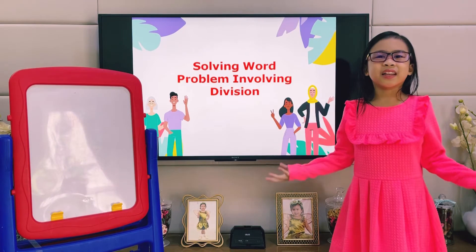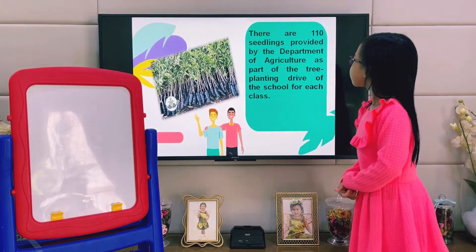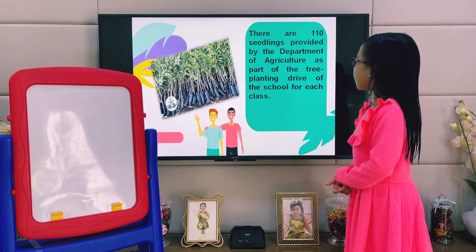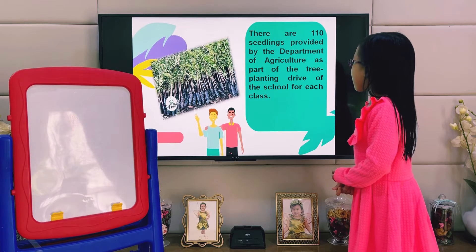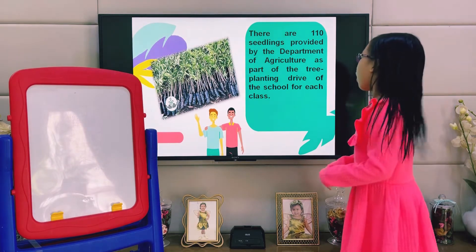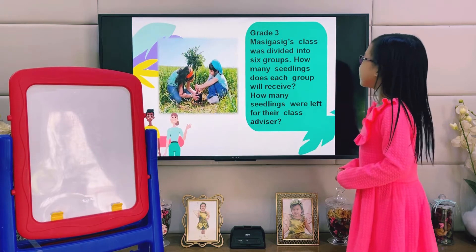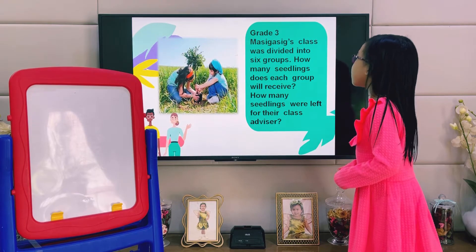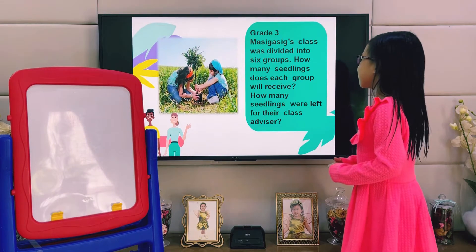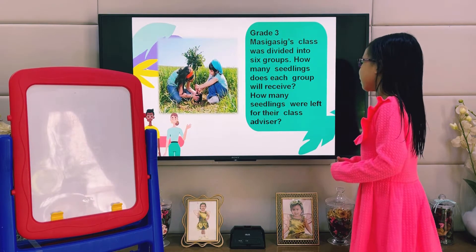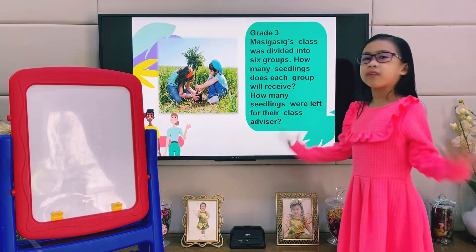Here's the given problem. There are 110 seedlings provided by the Department of Agriculture as part of the tree planting drive of the school for each class. Grade Chilomasigasi's class was divided into 6 groups. How many seedlings does each group receive? How many seedlings were left for their class advisor?